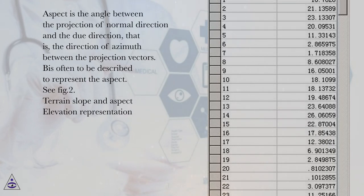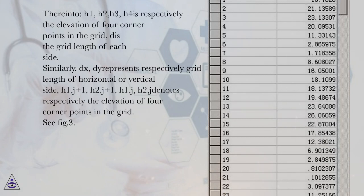Terrain slope and aspect. Elevation representation. Therein, h1, h2, h3, h4 is respectively the elevation of four corner points in the grid, d is the grid length of each side.